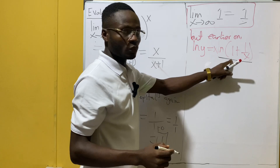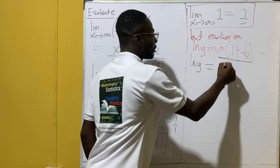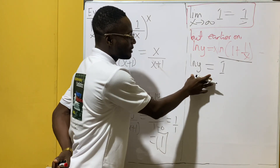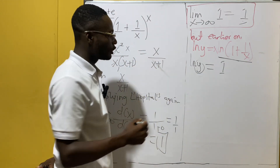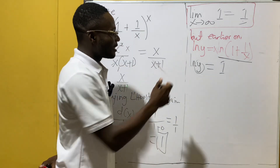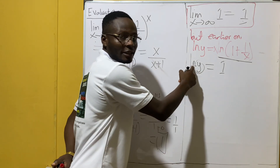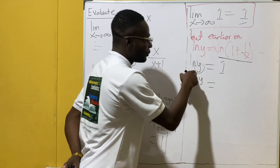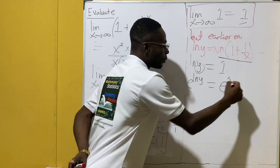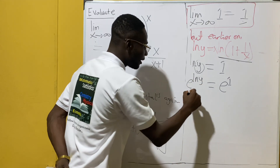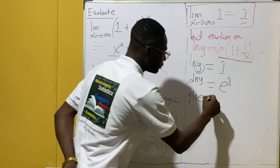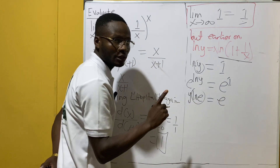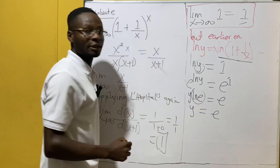Since ln y equals 1, we are interested in finding y. We apply the natural base e to both sides. So e^(ln y) = e^1. Since e^(ln y) = y, we have y equals e.